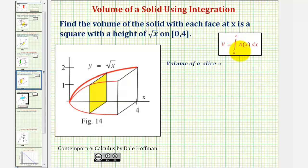So to help us set this up, let's begin by determining the approximate volume of a single slice. Let's say this yellow slice here. To approximate the volume of the yellow slice, we'll determine the area of the face, then multiply by the thickness, which would be delta x.